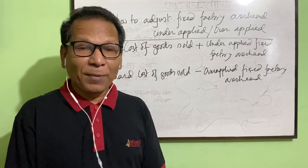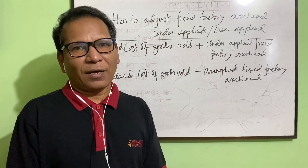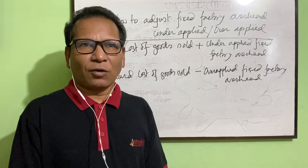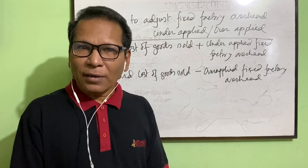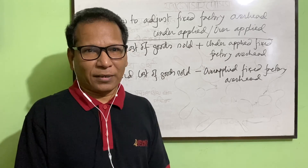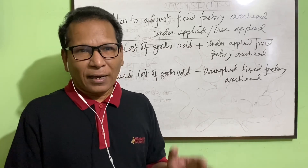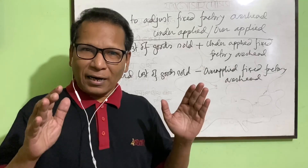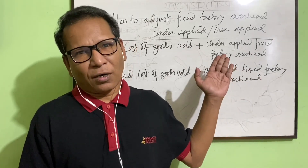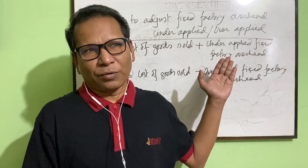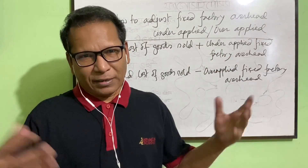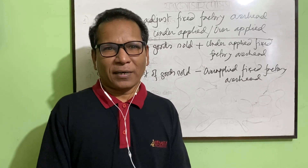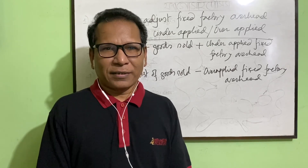Last of all, remember: if there is no difference between actual production and budgeted production or normal production, there will be no under applied or over applied of fixed factory overhead. It occurs only when actual production and budgeted production are different. Hope this episode on absorption costing will help you understand fixed overhead over applied and under applied, and how to adjust fixed factory overhead over applied and under applied. That is all. Stay safe. Goodbye.